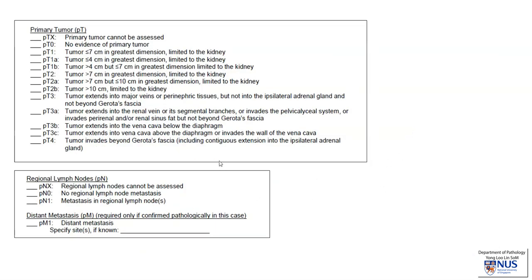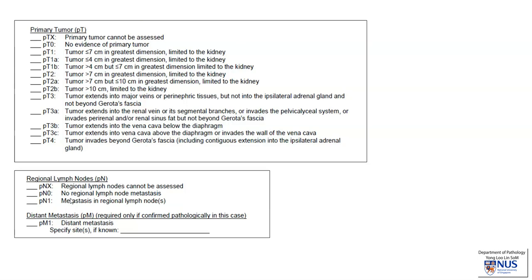Another very important prognostic exercise is to stage the tumor. We look at the AJCC staging system — this is the pathological staging — and there are some important cut-offs to consider. For size, we have 4 cm, 7 cm, and 10 cm as important cut-offs. We also look at local extension: whether it goes into major veins, extends beyond the renal capsule into perinephric tissues such as the perirenal fat or renal sinus fat near the hilar region, or even beyond Gerota's fascia. If available, we can also assess the lymph nodes.